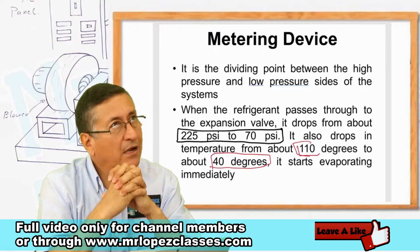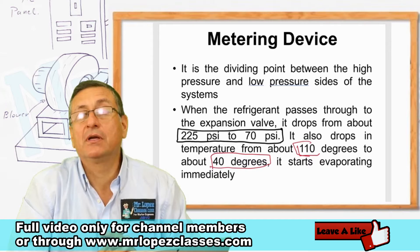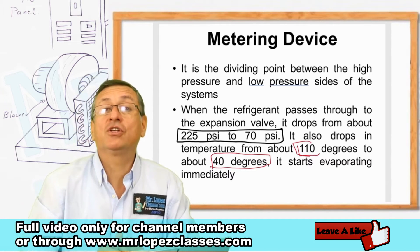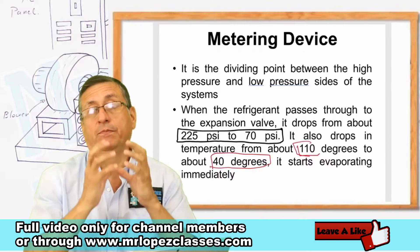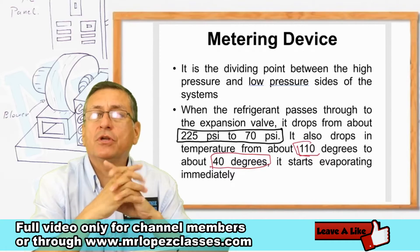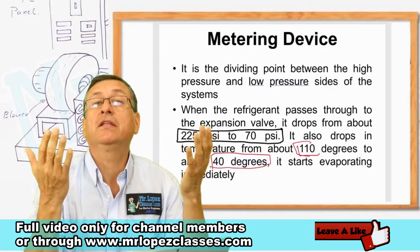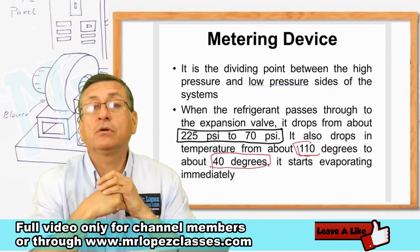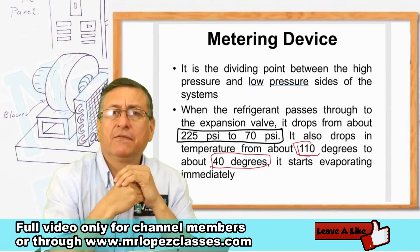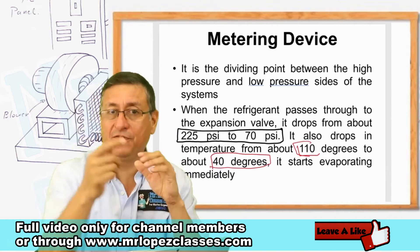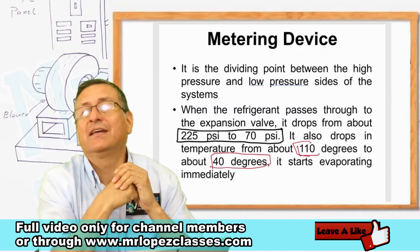After the expansion valve the pressure is around 60 to 70 PSI — a huge reduction in pressure, and also a huge reduction in temperature. At the input of the expansion valve the temperature is around 110 to 115 degrees Fahrenheit, and at the output it is around 40 degrees Fahrenheit.